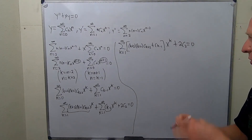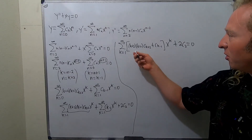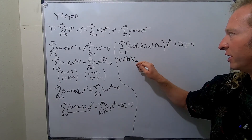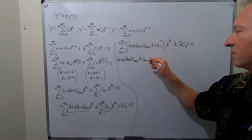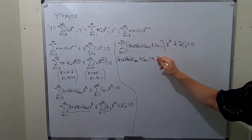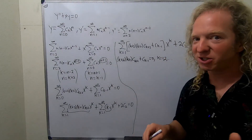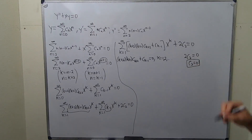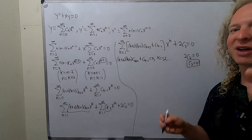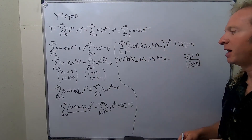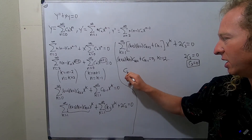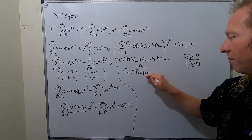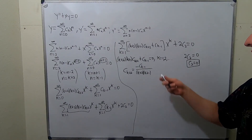Since this equals 0, all the coefficients must be 0. So we get the recurrence relation: (k+2)(k+1)·c_{k+2} + c_{k−1} = 0, for k = 1, 2, 3, 4, ... And setting the separate term to 0 gives c₂ = 0. Solving for the highest subscript: c_{k+2} = −c_{k−1} / [(k+2)(k+1)]. This is valid for k = 1, 2, 3, etc.